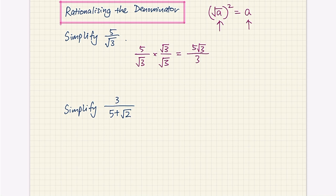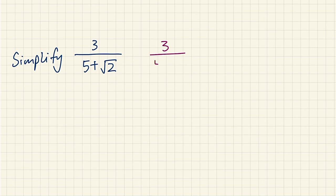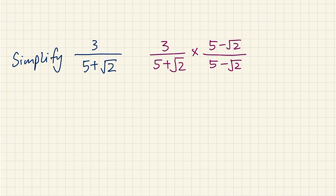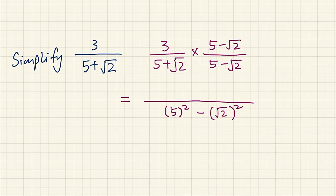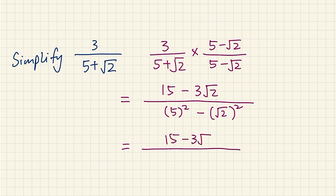Now that we've seen this, we can approach our earlier example: simplify 3 over 5 plus root 2. We rewrite it as 3 over 5 plus root 2, and the conjugate of the denominator is 5 minus root 2. We multiply the numerator with the same thing. Dealing with the denominator first: 5 squared minus root 2 squared. The numerator expands to 3 times 5, which is 15, and 3 times root 2, which is 3 root 2. Simplifying the denominator: 5 squared is 25, minus root 2 squared which is 2, giving us 25 minus 2 equals 23. So the final answer is 15 minus 3 root 2 over 23.